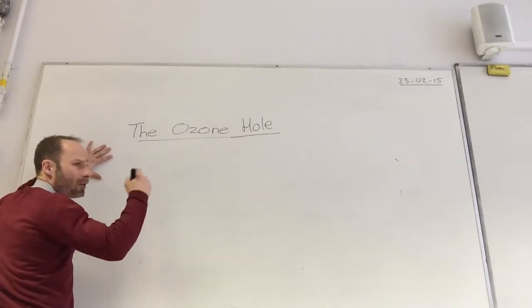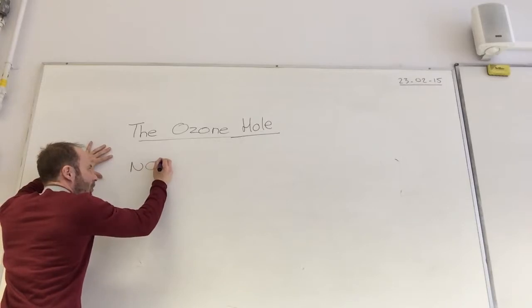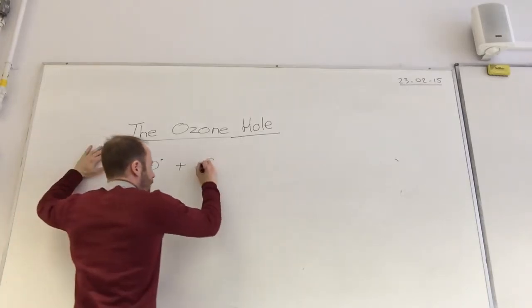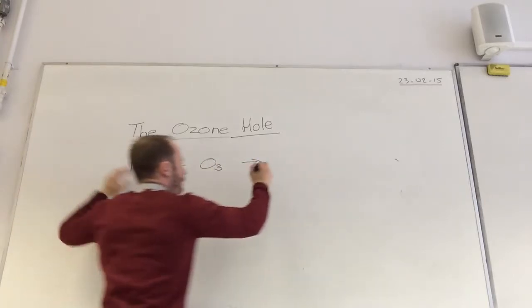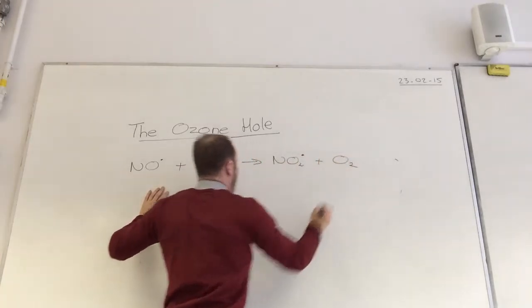So we could do a similar thing for nitrogen oxide. To simplify, I'm just going to use NO. So what happens? NO dot meets ozone to produce NO2 dot plus O2.